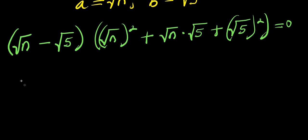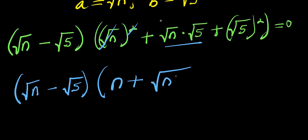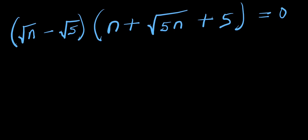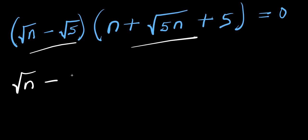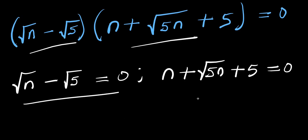Simplifying: root n squared cancels to n, root n times root 5 gives square root of 5n, and root 5 squared gives 5. So we have root n minus root 5, times n plus square root of 5n plus 5, equals zero. We equate each factor to zero.